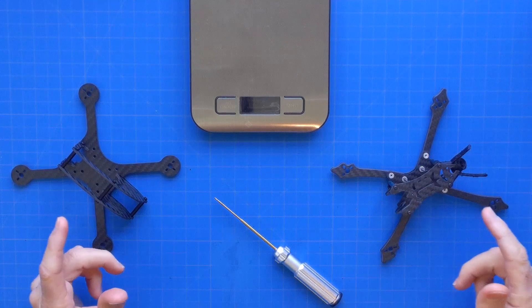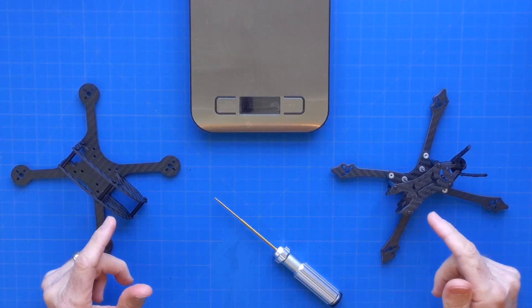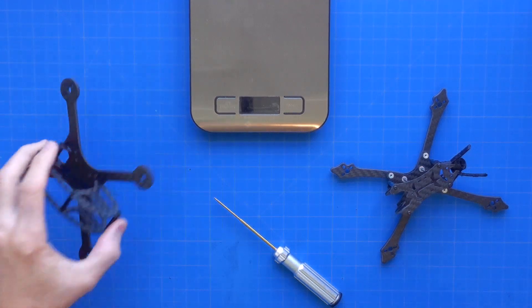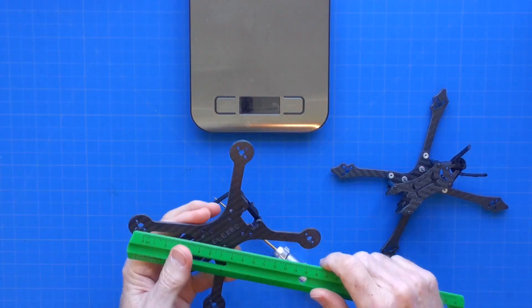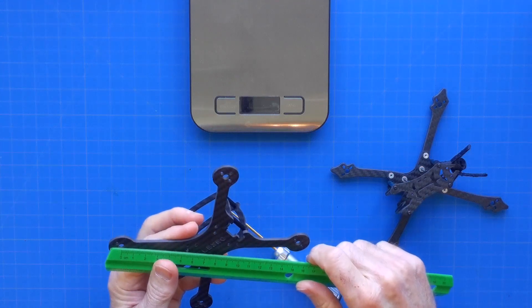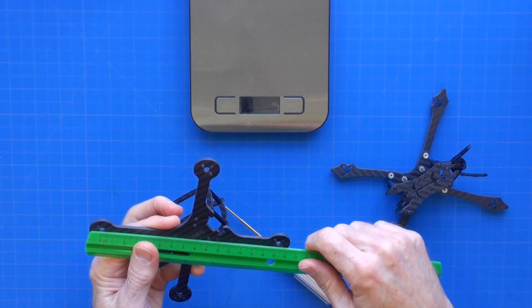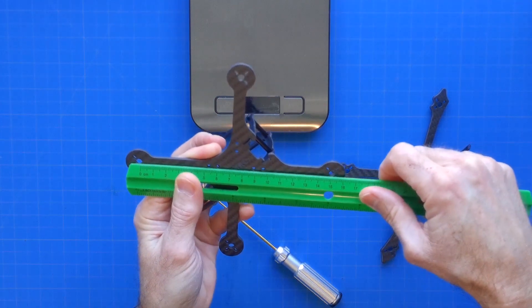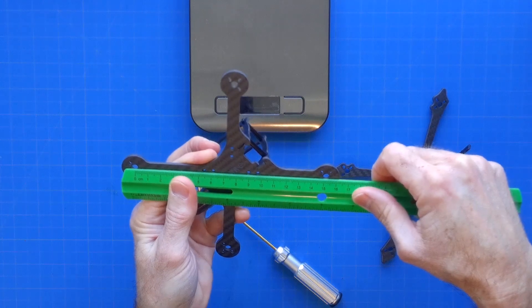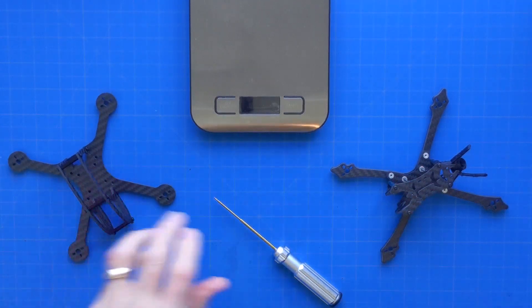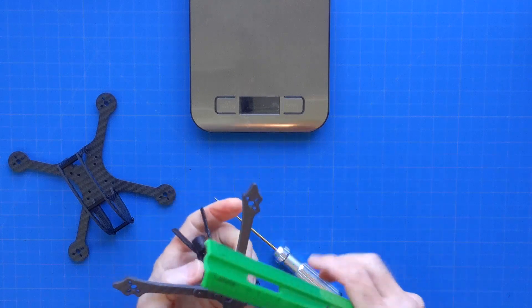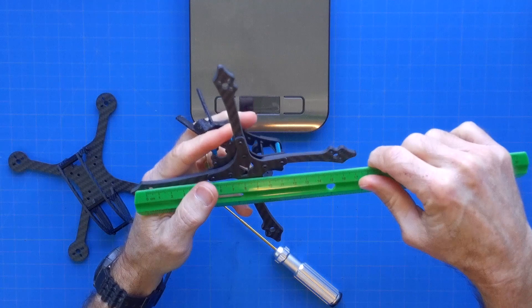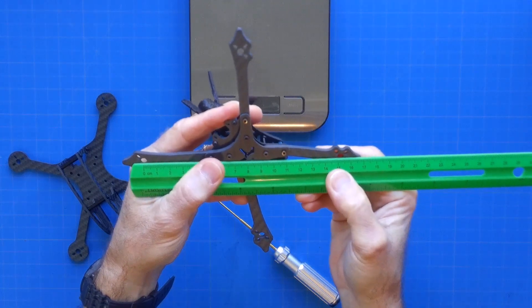Okay, the first parameter that we're going to look at on both of these frames is going to be the wheelbase or the diagonal motor to motor distance, the actual size of the frame. So on the FlexRC Ascent, we're going to measure it from the center of motor mount. And this is coming in at right at 153 millimeters. And for the HDLRC Aero 3 Hybrid, we are getting right at 152 millimeters.